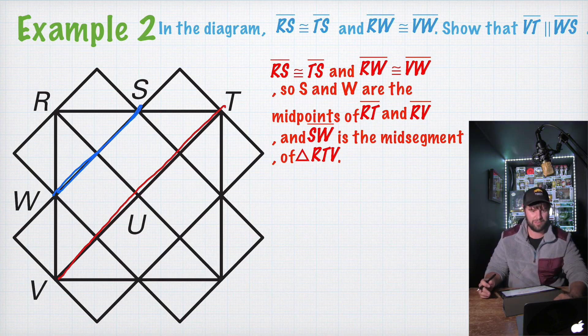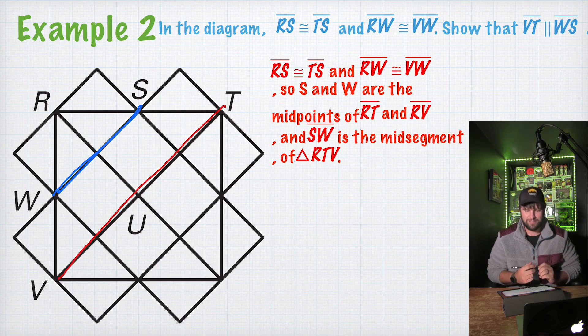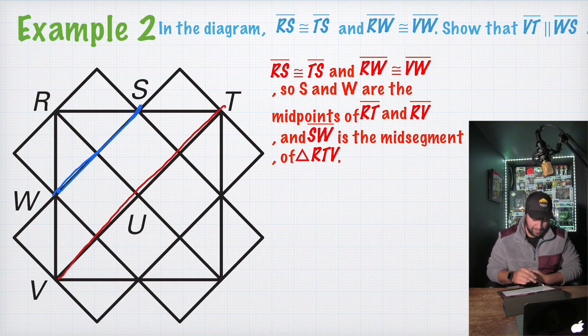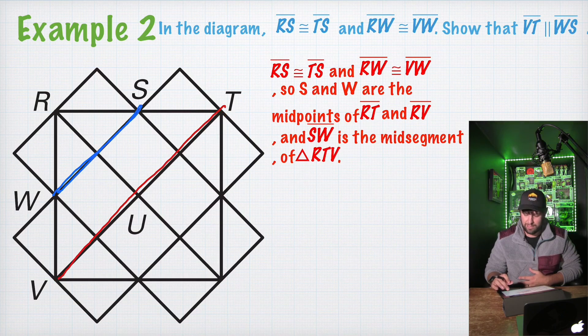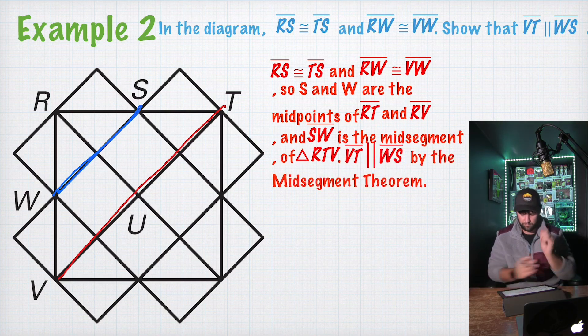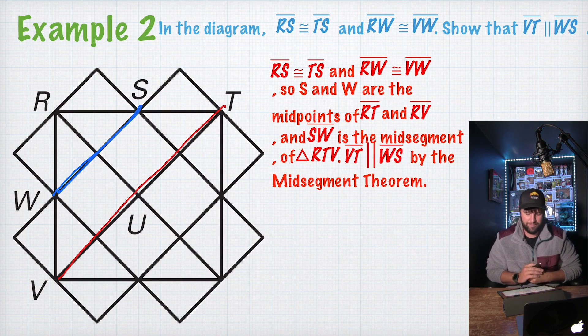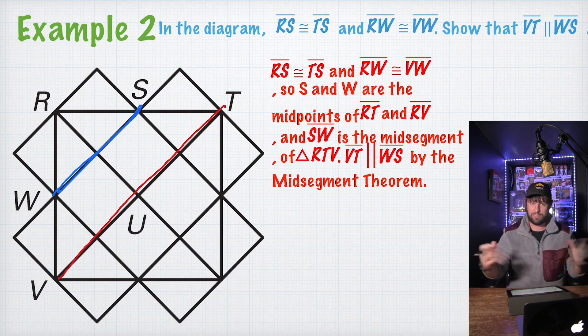And we know by the mid-segment theorem that the mid-segment is parallel to the triangle's third side. The segment connecting the midpoints of two sides of a triangle is parallel to the third side and is half as long as that side. So we know it's parallel to the third side. So since we know SW is a mid-segment, we can say that VT is parallel to WS by the mid-segment theorem. Not bad. Not a hard example. May seem kind of hard just trying to figure out where you're going to start, but that's why we do these proofs, these examples.